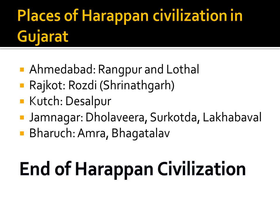Small and big colonies of Harappan civilization have been found in Gujarat, including Rangpur and Lothal in Ahmedabad district, Rojri or Srinathgarh in Rajkot district, Desalpur in Kutch district, Dholavira, Surkotada, and Lakhbawal in Jamnagar district, and Amra and Bhaktalav on the bank of the Kim river in Bharuch district.